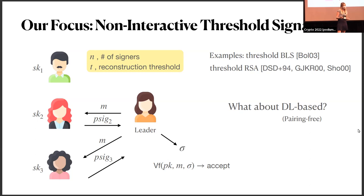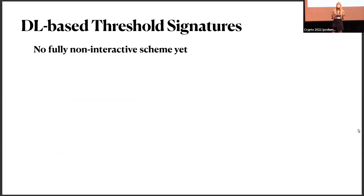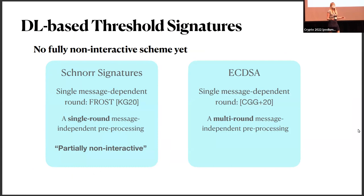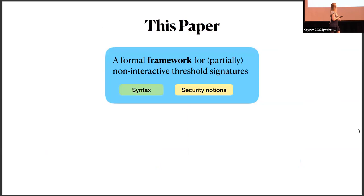Examples of fully non-interactive schemes include threshold BLS and threshold RSA. But for discrete log-based, pairing-free schemes, there currently exist no fully non-interactive schemes. There is a scheme called FROST, which consists of two rounds: a single signing round preceded by one message-independent preprocessing round. We refer to this as partially non-interactive. For ECDSA, there is also a single signing round scheme, but it incorporates multiple preprocessing rounds, which we do not consider in this work.